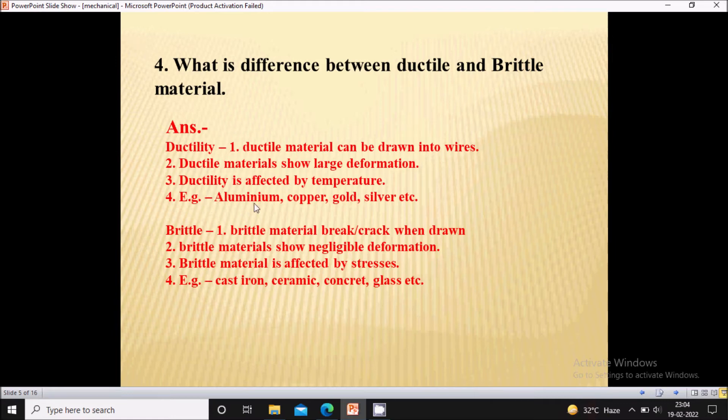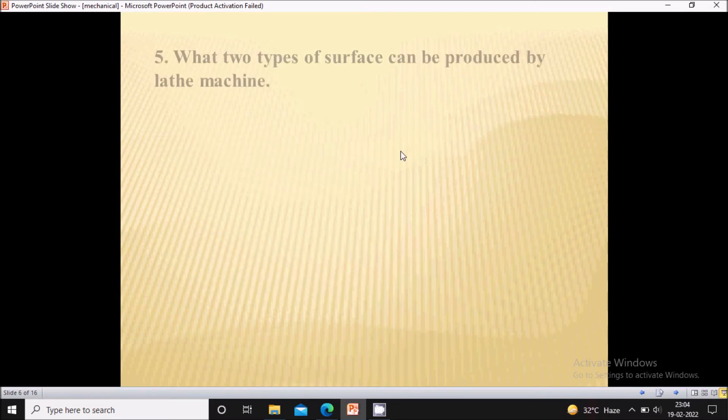Examples of ductile materials are aluminum, copper, gold, silver, etc. And the examples of brittle material are cast iron, ceramic, concrete, glass, etc. In this way you can differentiate between ductile material and brittle material.